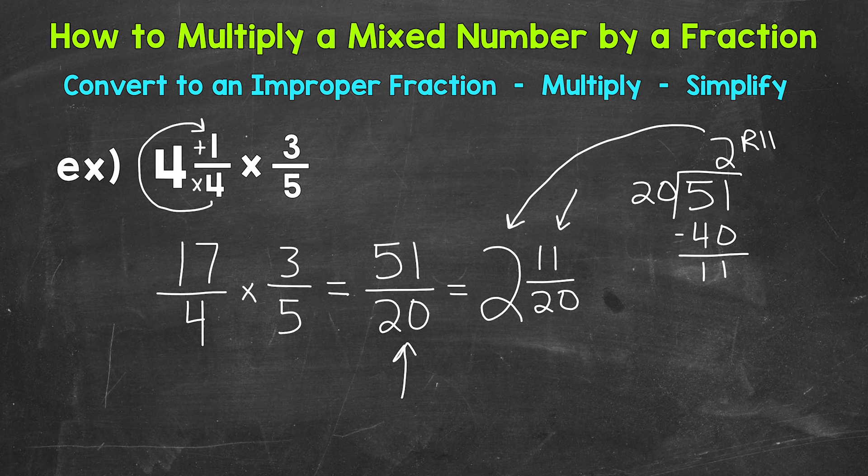Always check to see if you can simplify the fractional part of a mixed number. 11 20ths is in simplest form. The only common factor between 11 and 20 is 1. So we are done. 4 and 1 4th times 3 5ths equals 2 and 11 20ths. So there you have it.